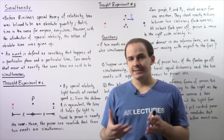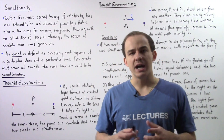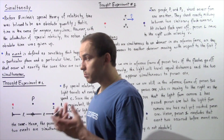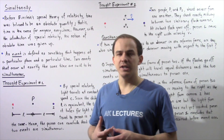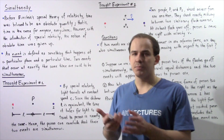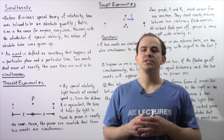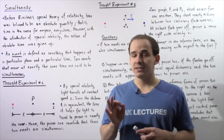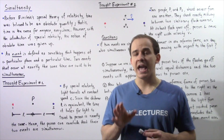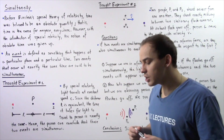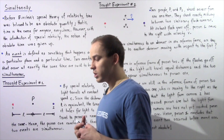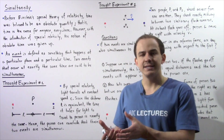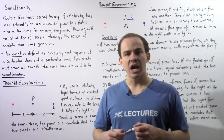Simultaneity is an idea that basically deals with the concept of time. Before Albert Einstein proposed his special theory of relativity, scientists believed that time was an absolute quantity — that is, time is the same for everyone everywhere. However, with the introduction of the special theory of relativity, scientists basically abandoned this idea of absolute time.